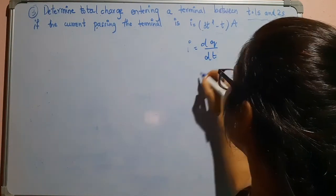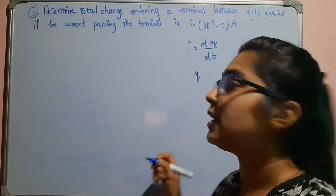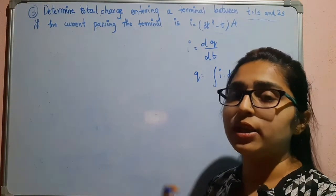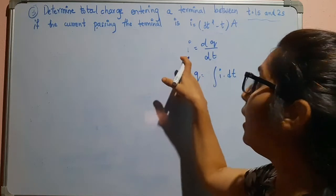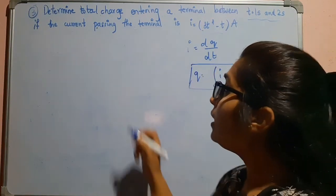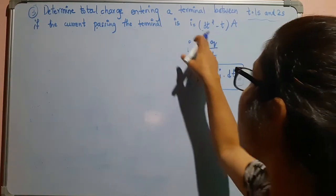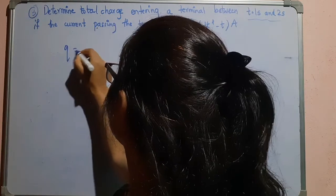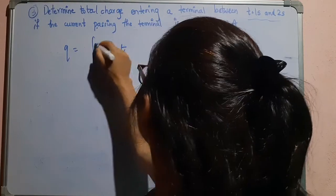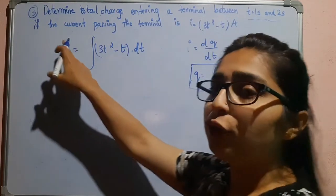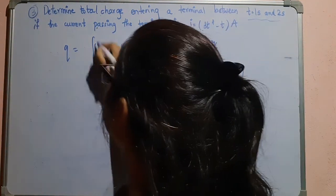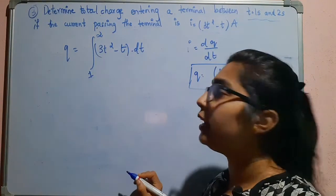You know the formula i = dq/dt, which is the rate of change of charge. To find q, we integrate both sides — integration and differentiation cancel — so q = ∫i dt. Substituting i = 3t² − t, we get q = ∫(3t² − t) dt with limits from 1 to 2.